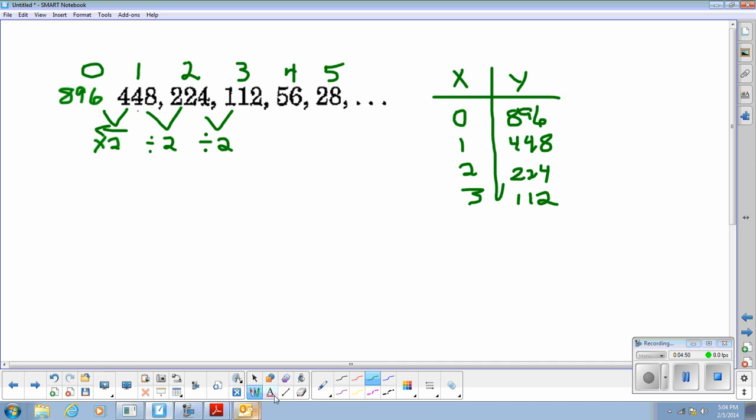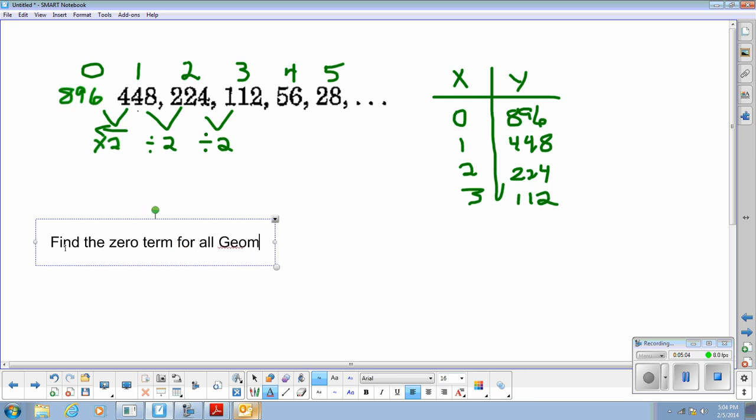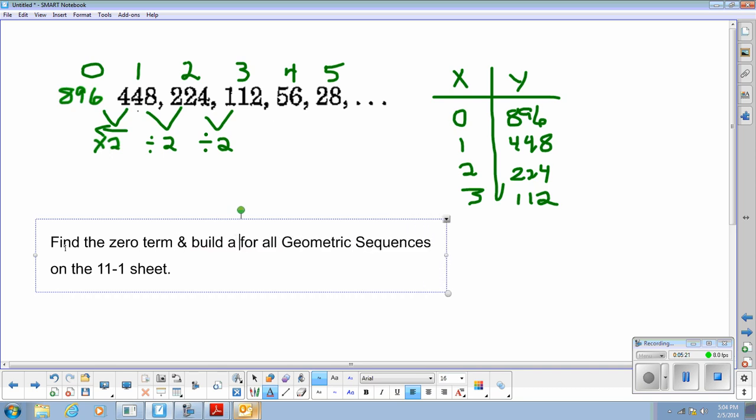So your task now is to do this. I want you to find the zero term for all geometric sequences on the 11-1 sheet. I want you to find the zero term and build a t-table for all geometric sequences on the 11-1 sheet.